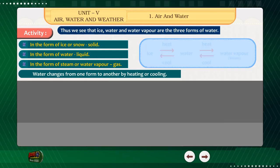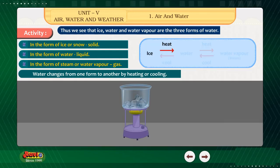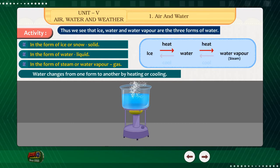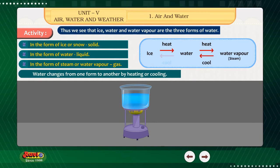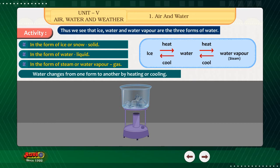Water changes from one form to another by heating or cooling. On heating, ice changes into water and water changes into water vapour. On cooling, water vapour changes into water and water changes into ice.